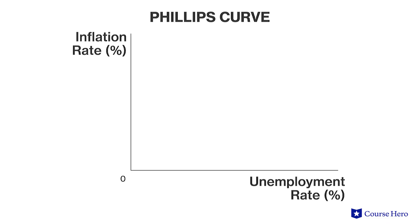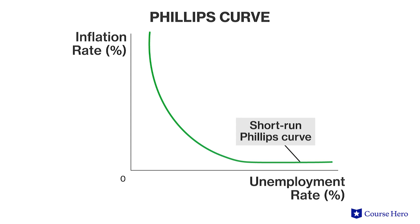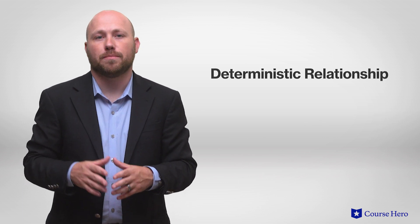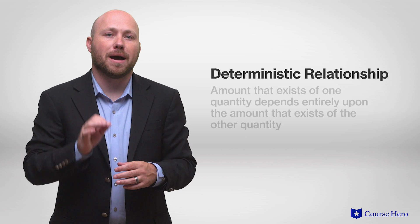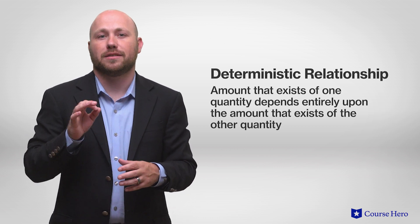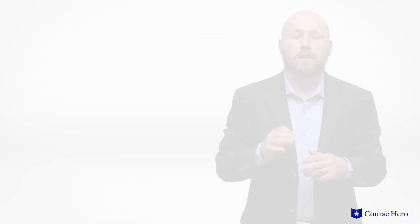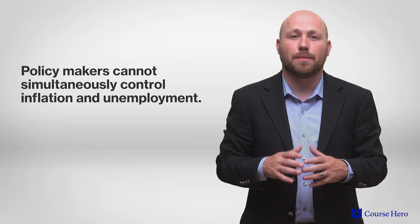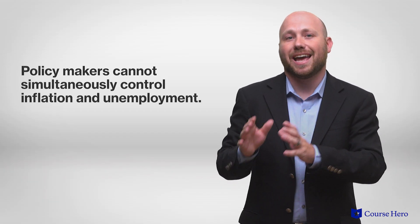According to the Phillips curve, policymakers cannot influence either unemployment or inflation without affecting the other. Instead, there would be a trade-off, where a small decrease in unemployment would be accompanied by a small increase in inflation. In principle, the Phillips curve would give a deterministic relationship between unemployment and inflation, meaning that the amount of one quantity depends entirely upon the amount of the other. Thus, policymakers cannot simultaneously control inflation and unemployment.